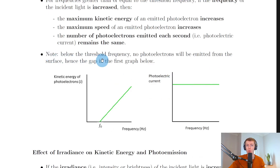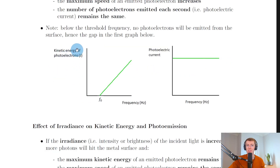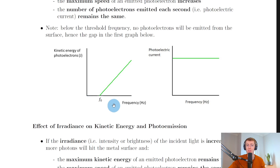Note that below the threshold frequency, no photoelectrons will be emitted from the surface, hence the gap in the first graph. If we plot kinetic energy of the photoelectrons against frequency, you'll see a gap between the origin and the threshold frequency. Below the threshold frequency, no photoelectrons are emitted, so kinetic energy is zero. At and above the threshold frequency, we get a linear relationship — as frequency increases, the kinetic energy of the ejected photoelectrons increases as well.